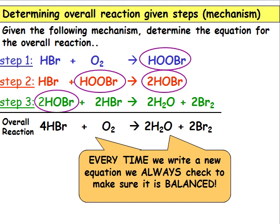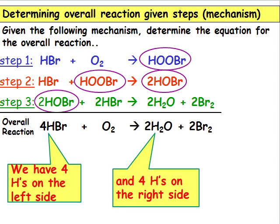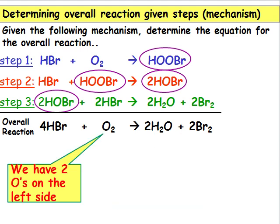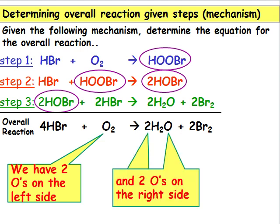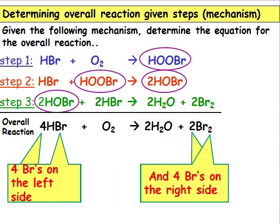Every time you write a new equation, we always check to see that it is balanced. We have 4 H's on the left side and 4 H's on the right side. We have 2 O's on the left side and 2 O's on the right side. 4 Br's on the left side and 2 times 2 equals 4 Br's on the right side. So the equation is balanced.